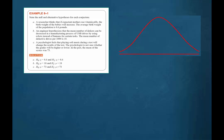Now let's assume that the researchers in each of these examples have verified that the populations are normally distributed. Looking at example A, a researcher thinks that if expectant mothers use vitamin pills, the birth weight of the babies will increase. The average birth weight of the population is 8.6 pounds.